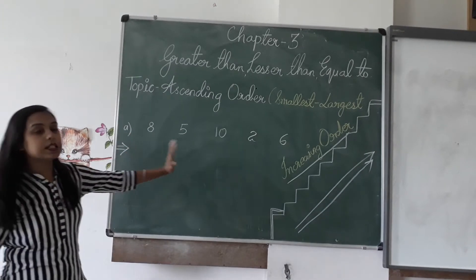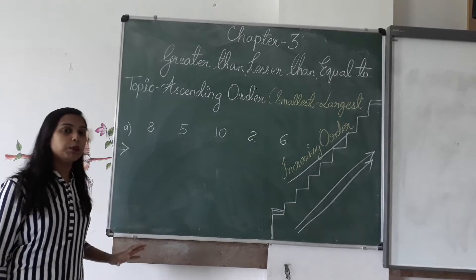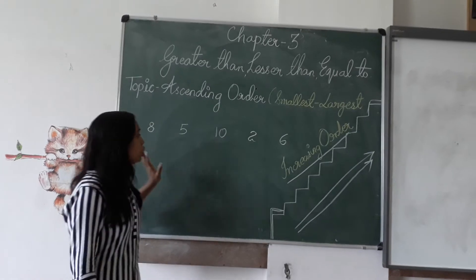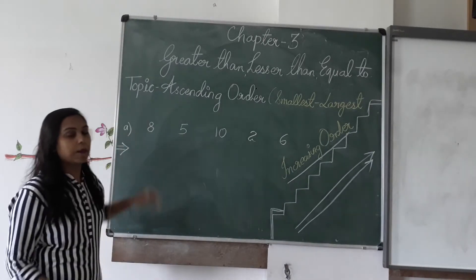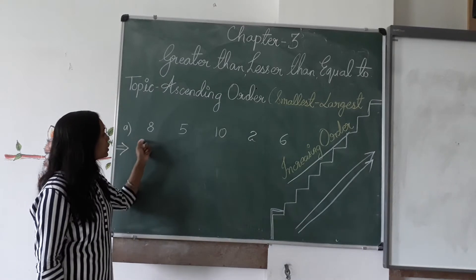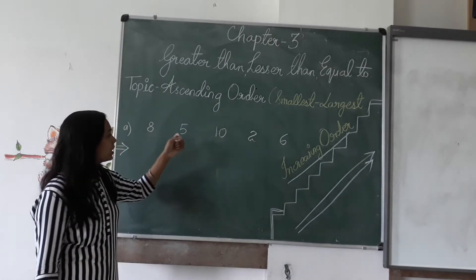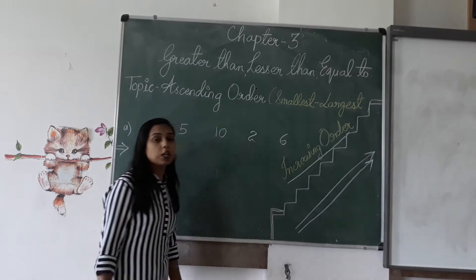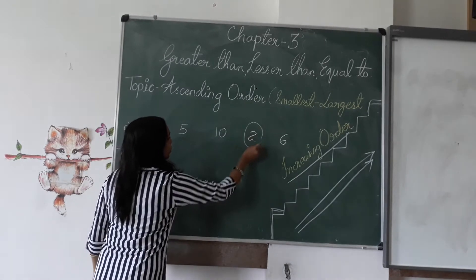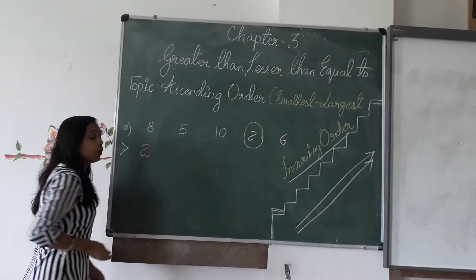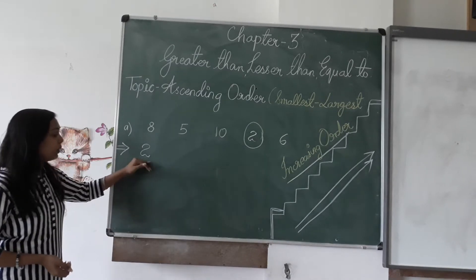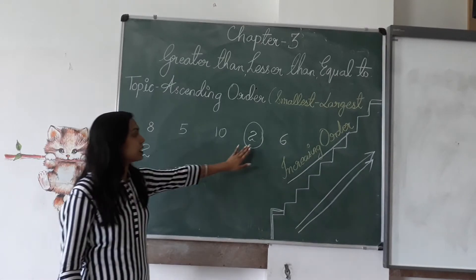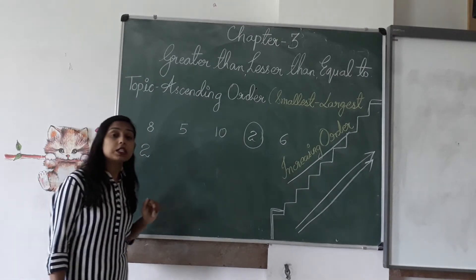Now we have to arrange them in ascending order. Ascending means smallest first, then a little bigger, then bigger, then the largest number. So we have to identify the most smallest number. Can you identify which is the smallest number here? I think two. Yes. So we will write two first. The smallest number is two.